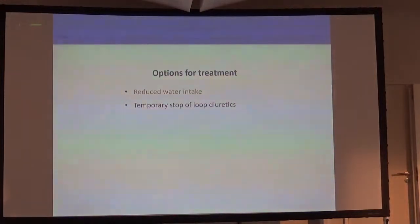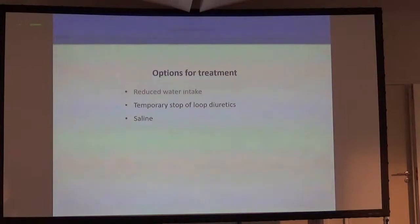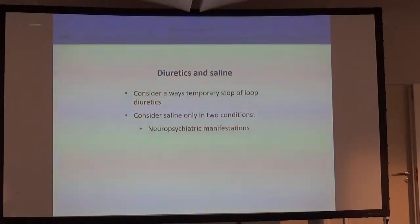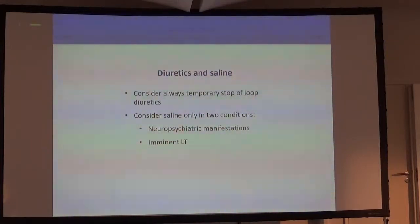What about temporary withdrawal of diuretics and saline? Temporary withdrawal of diuretics should always be considered. Saline should be considered only in two clinical settings: the first is severe neuropsychiatric syndromes — meaning grade 2 or 4 hepatic encephalopathy — or an imminent liver transplantation, because the presence of hyponatremia at the time of liver transplant has a negative impact on survival after transplantation.